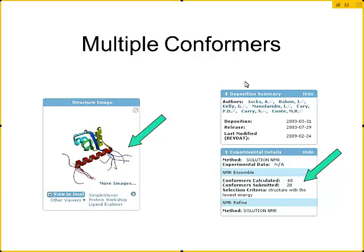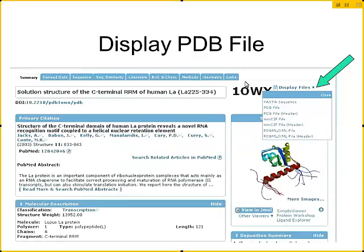This particular structure has floppy ends, and if you look at the experimental details, they calculated 60 conformers and 20 are submitted. In older structures — about 30 years ago — the best structure was put in a separate PDB file, so you might find 1OWX having one structure and 1OWY having the 20 structures. But in structures solved in the last 10 years or so, the first structure in the file is generally the best one to work with if you only want to use a single structure.